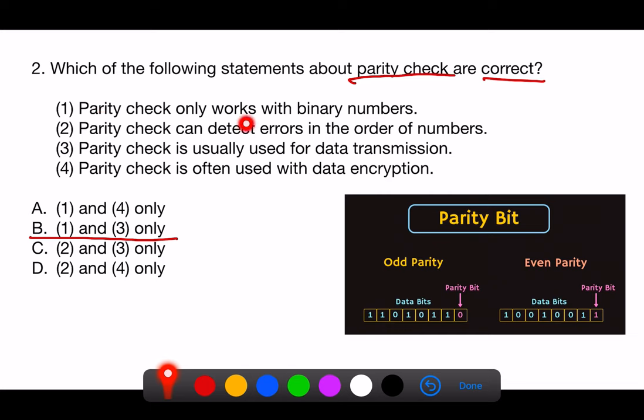1. Parity check only works with binary numbers. Correct. Parity checks are a form of error detection that operates on binary data. It involves adding an extra parity bit to a string of binary data so that the total number of 1 bits is either even (even parity) or odd (odd parity).